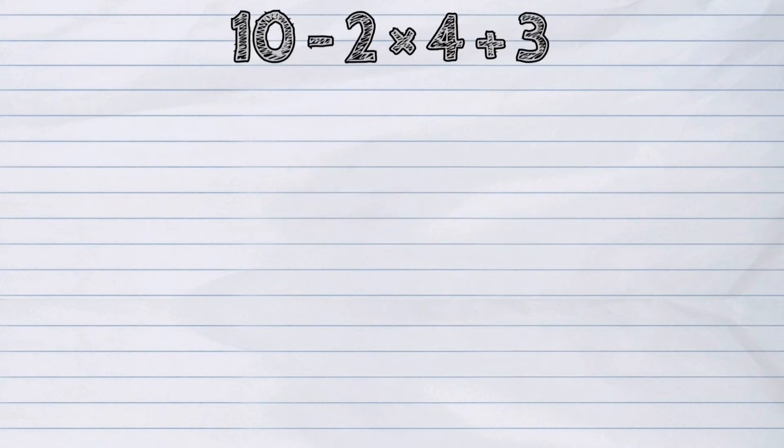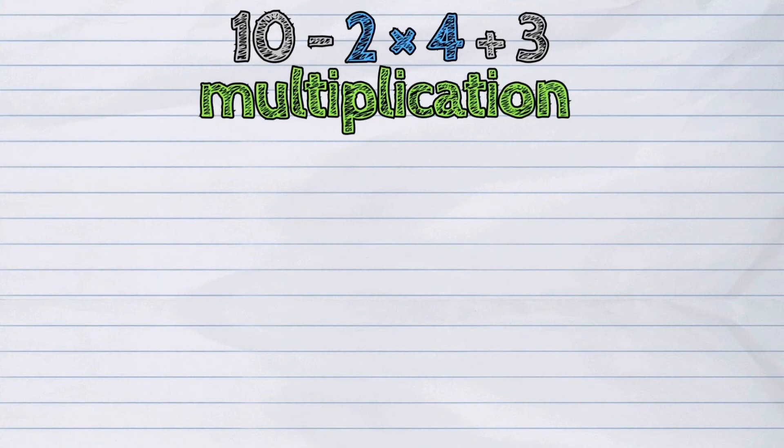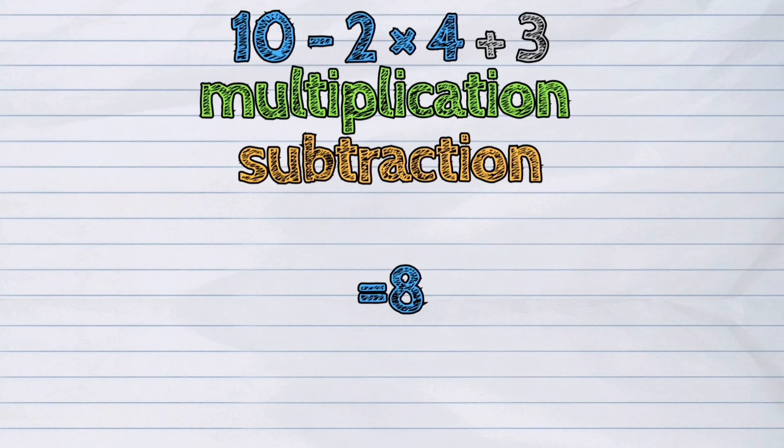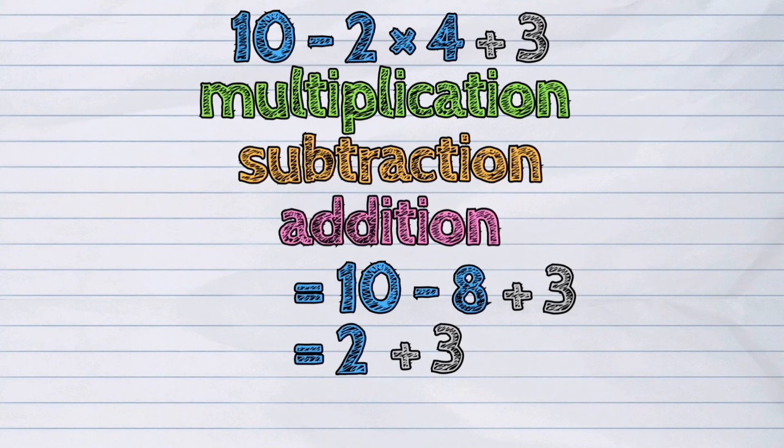Last example: 10 minus 2 times 4 plus 3. The first operation in this expression is multiplication. 2 times 4 is 8. Then subtraction, since it comes first then addition. 10 minus 8 is 2. And the last operation is addition. 2 plus 3 is 5.